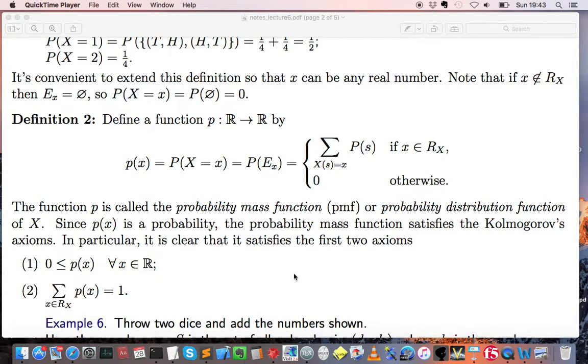We also showed that the probability mass function remains a proper probability measure, that is, it satisfies Kolmogorov's axioms. Note that for brevity only axiom 1 and axiom 2 were considered here.